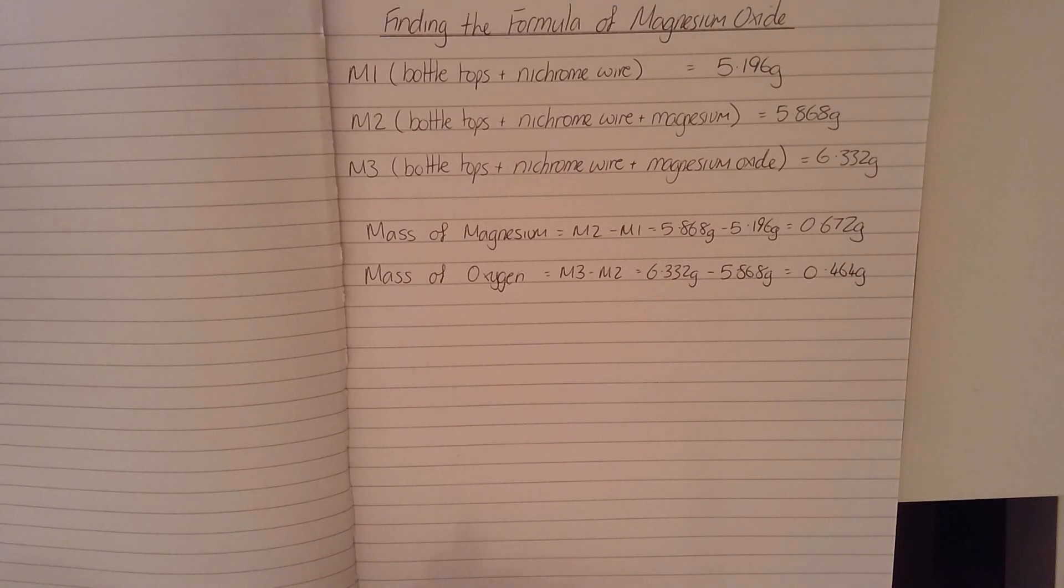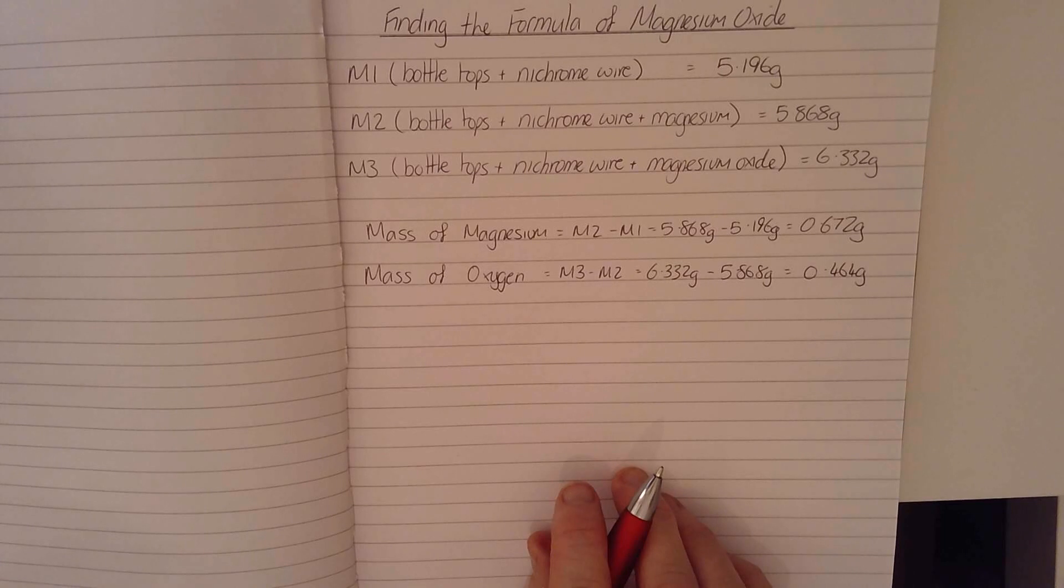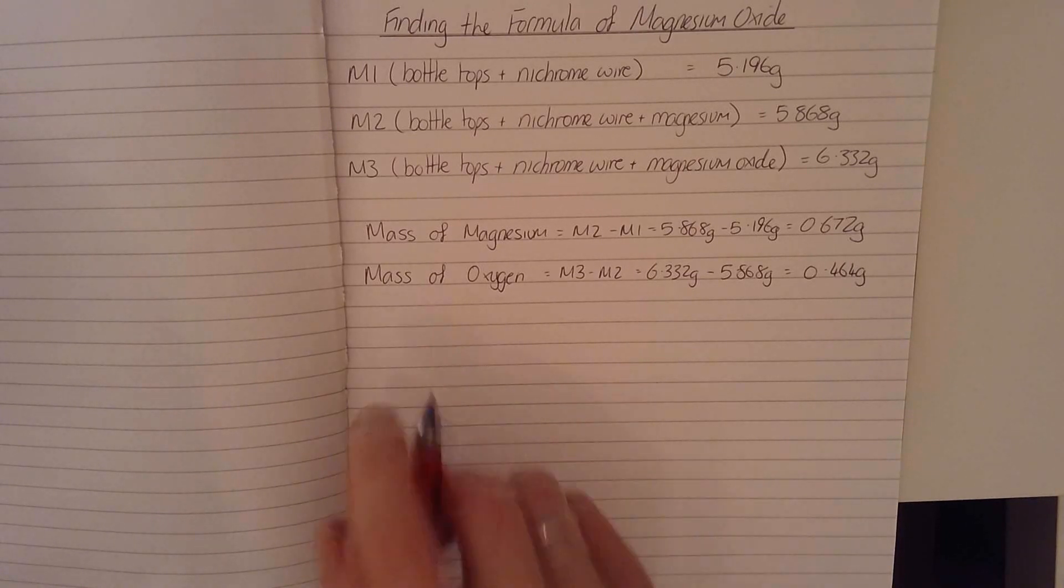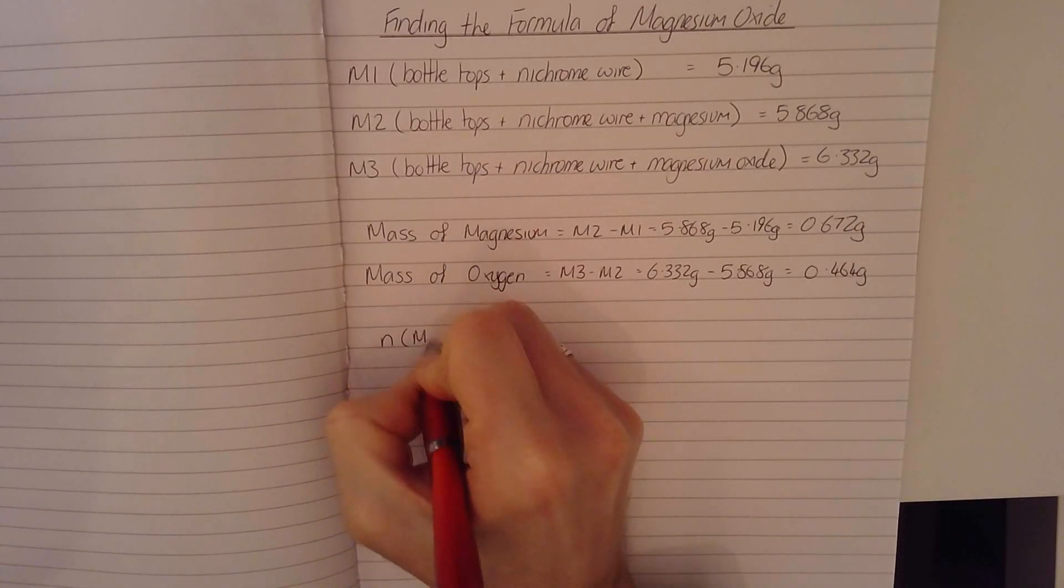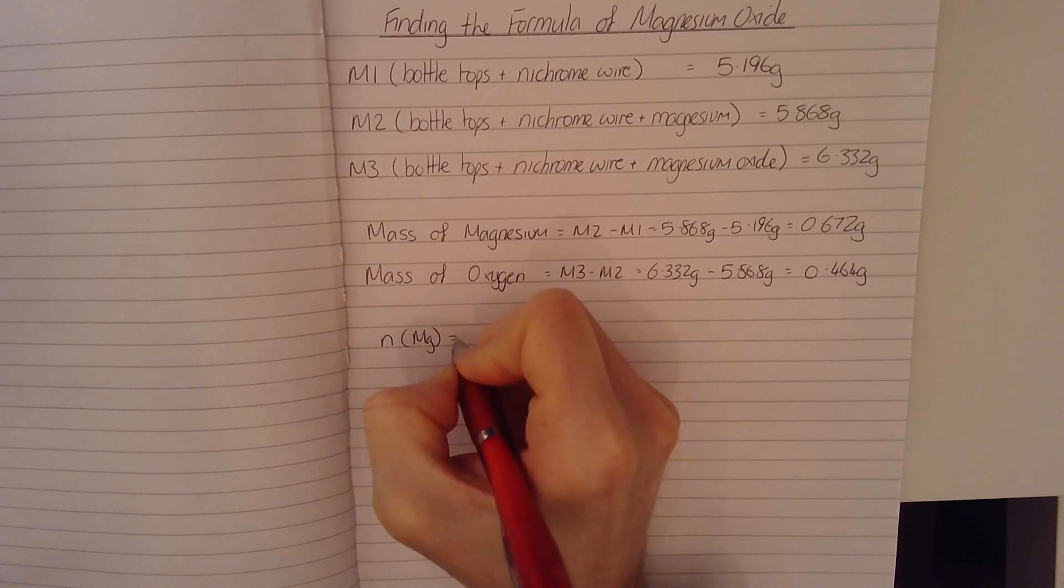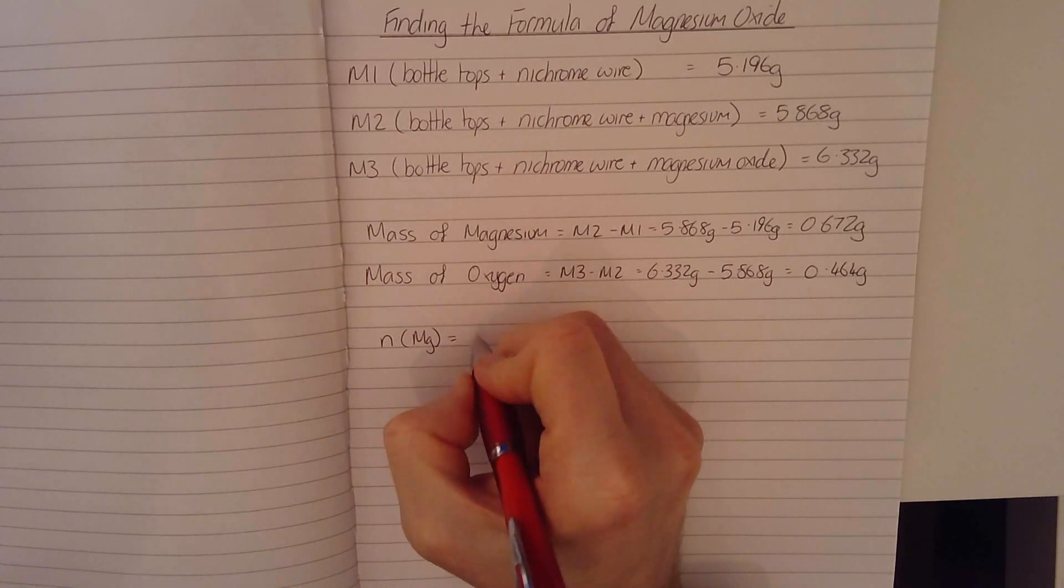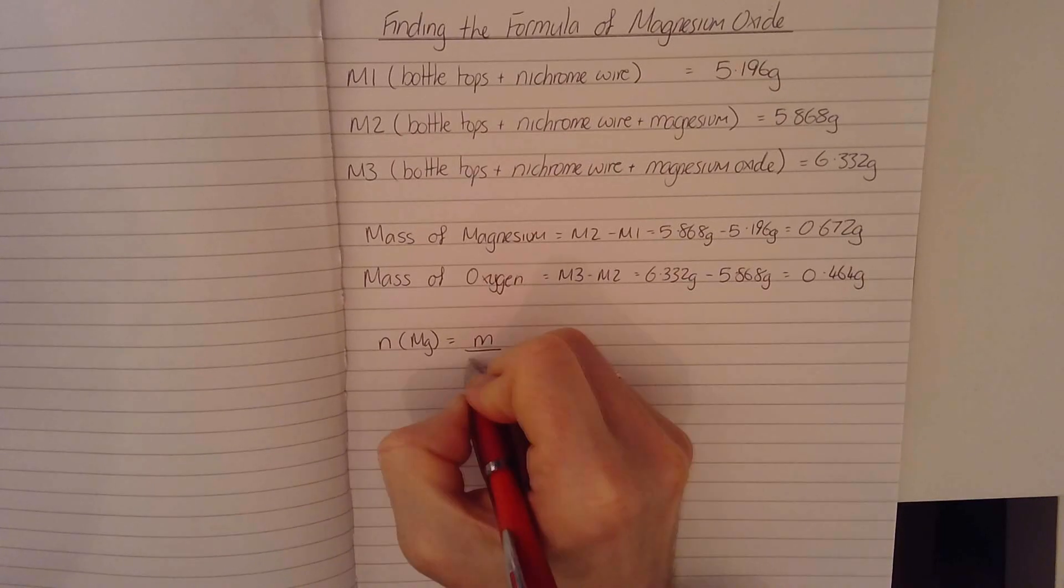Now my next step is to work out the number of moles of the magnesium and the number of moles of oxygen, because it's that ratio of the number of moles that will tell me the formula of magnesium oxide. Now I can use the formula that we have used before to work out the number of moles for magnesium. It is just the mass divided by the GFM, the gram formula mass, which I can get from the data booklet.